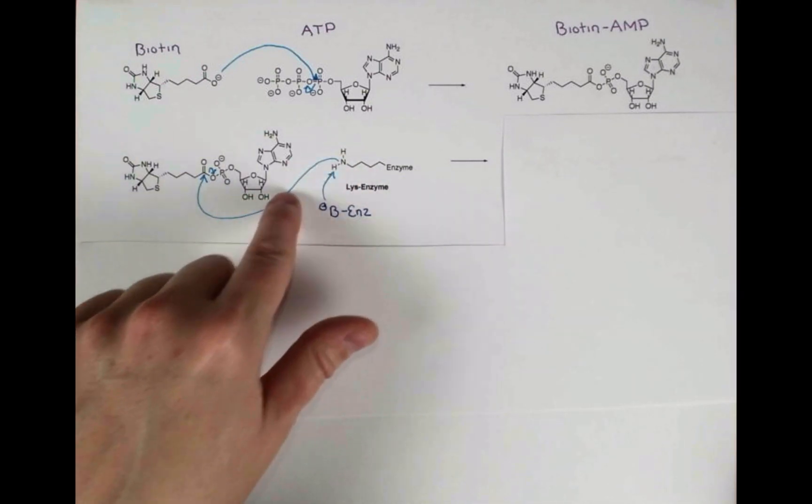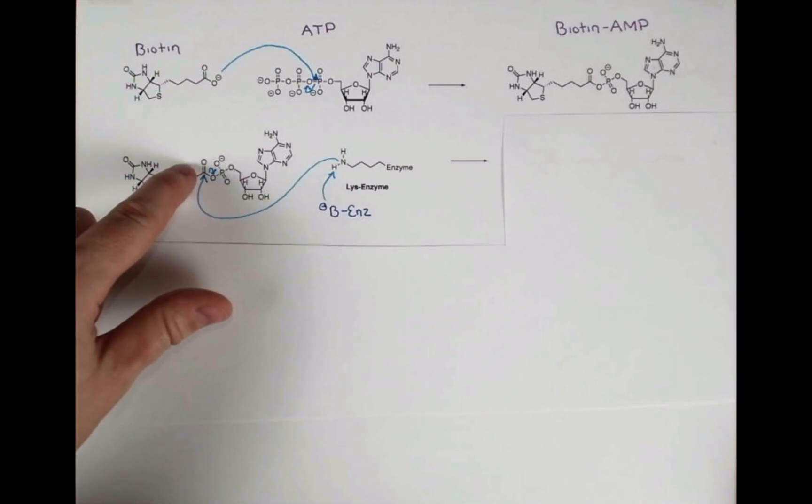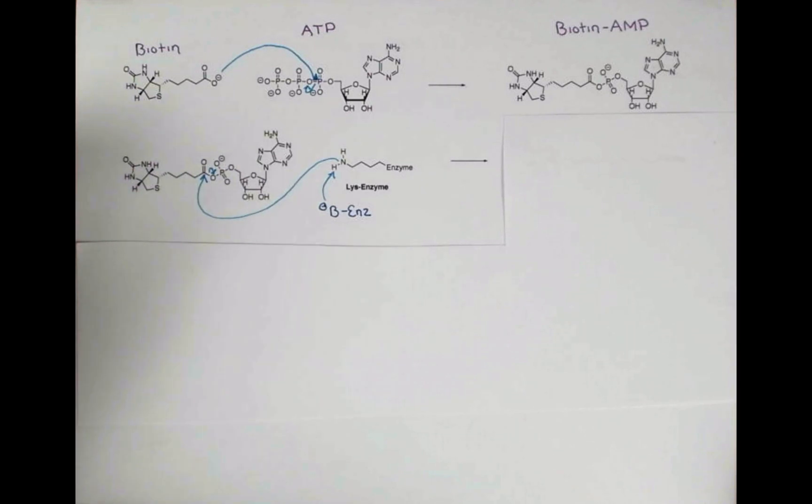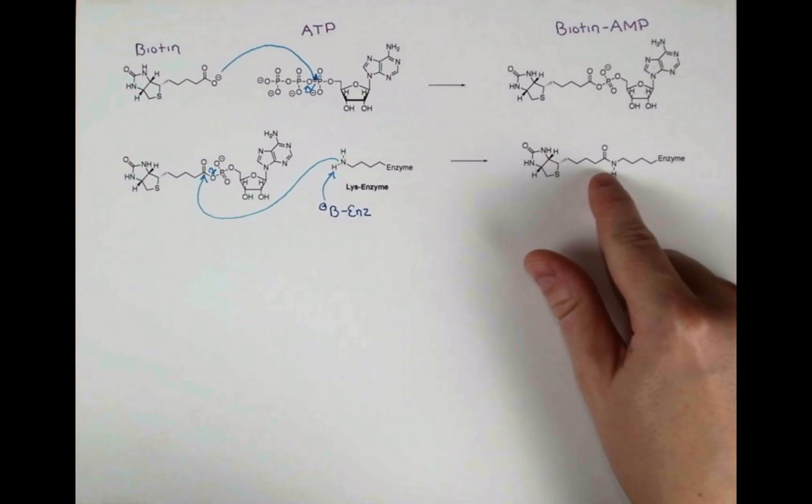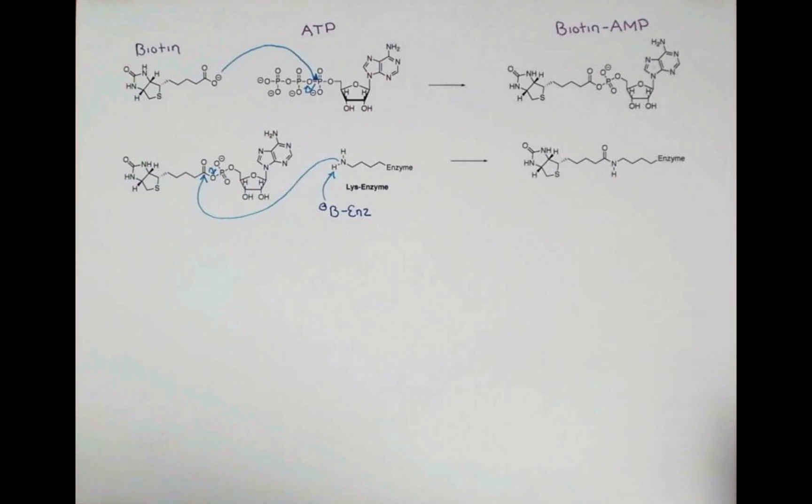So these two arrows represent a shorthand of two distinct steps. The first, where the nitrogen attacks here and these electrons push up onto oxygen, forming a tetrahedral intermediate. In the second step, the electrons swing back down and kick off this group. But this is a perfectly acceptable abbreviation for that. Now biotin is linked to the enzyme in an amide linkage here, and this enzyme is said to be biotinylated.